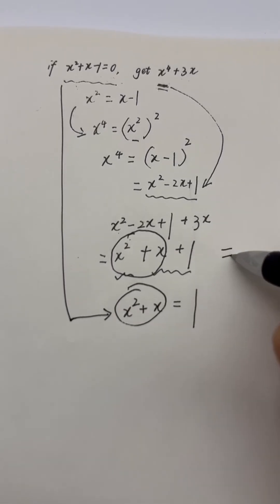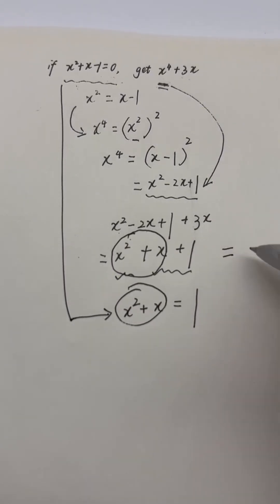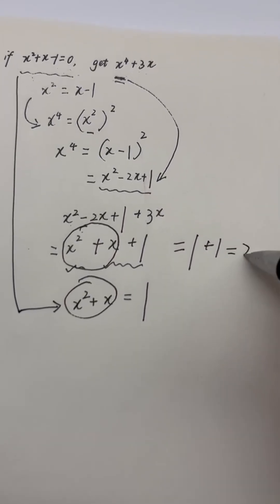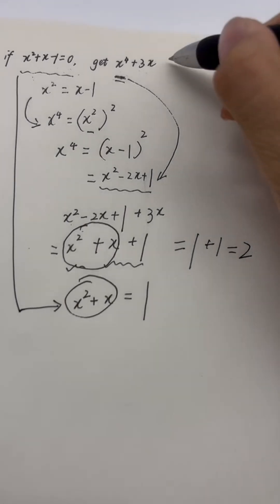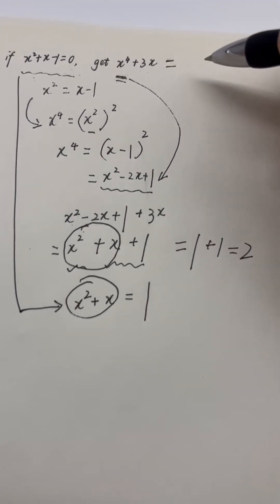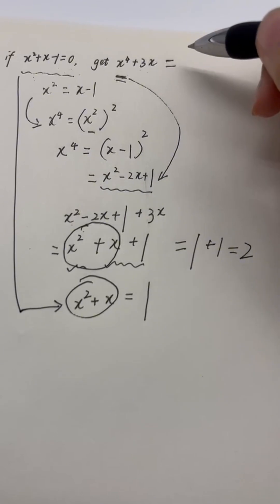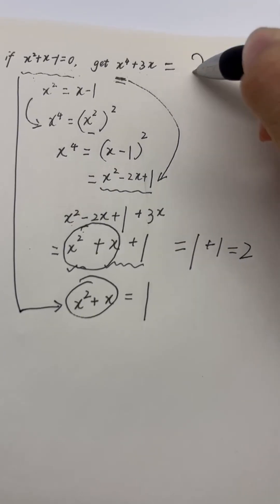Here x squared add x equals 1, 1 add 1 equals 2, so we know x to the power of 4 add 3 times x equals 2.